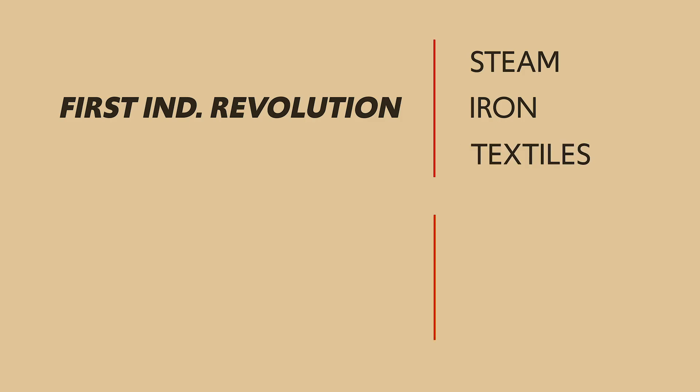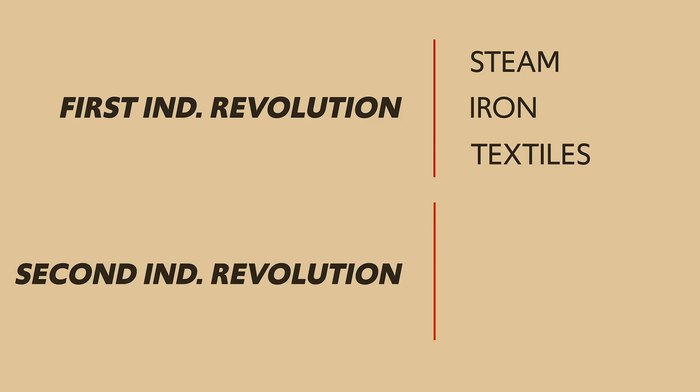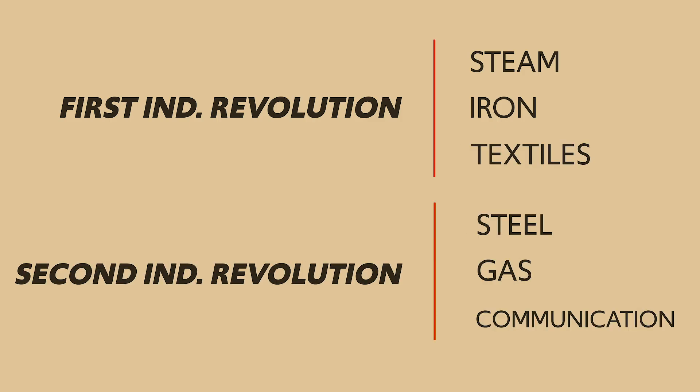Those are some of the greatest technological hits from the First Industrial Revolution. Now let's turn our attention to the Second Industrial Revolution, which basically occurred from the mid-19th century to the early 20th century. The major players in the Second Industrial Revolution were the United States, Great Britain, and Germany. Whereas the First Industrial Revolution majored in steam power, iron, and textiles, the Second Industrial Revolution majored in steel, gas power, and communications. Let's look at each of those in turn. First, steel.